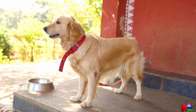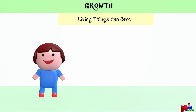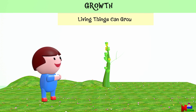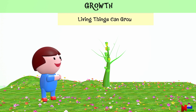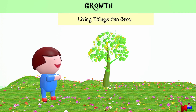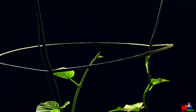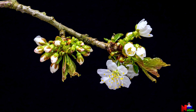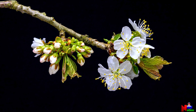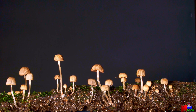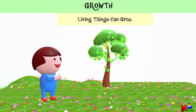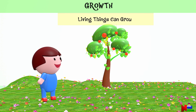Plants also grow, but instead of getting taller like us, they might grow more leaves or flowers. So whether it's you, your pet, or a flower in the garden, growth is what makes living things get bigger and change as they become adults.